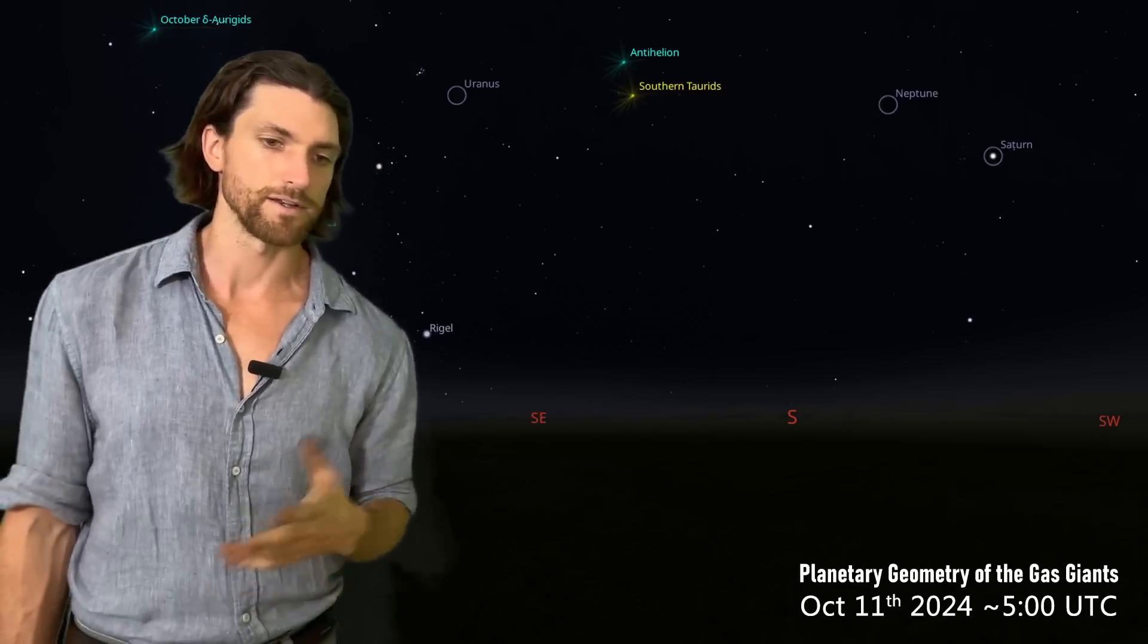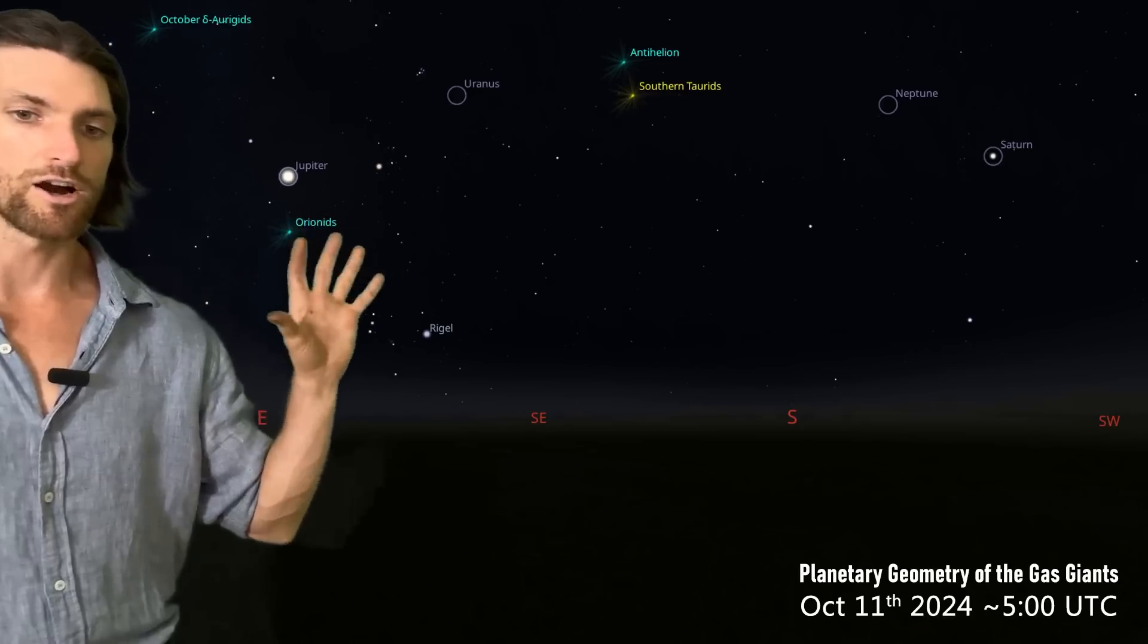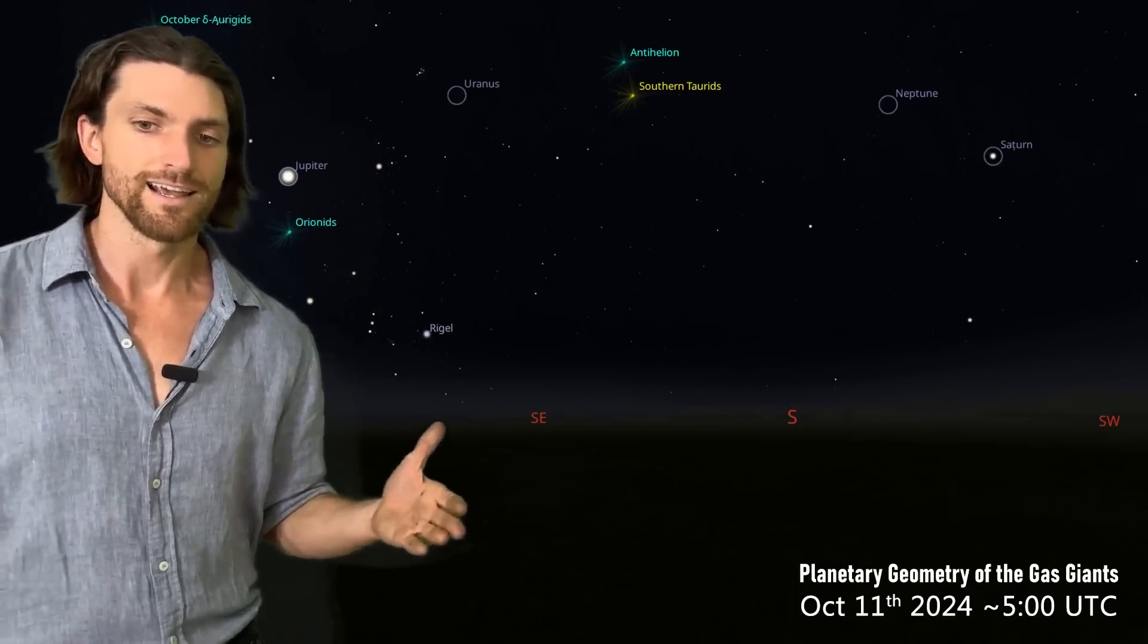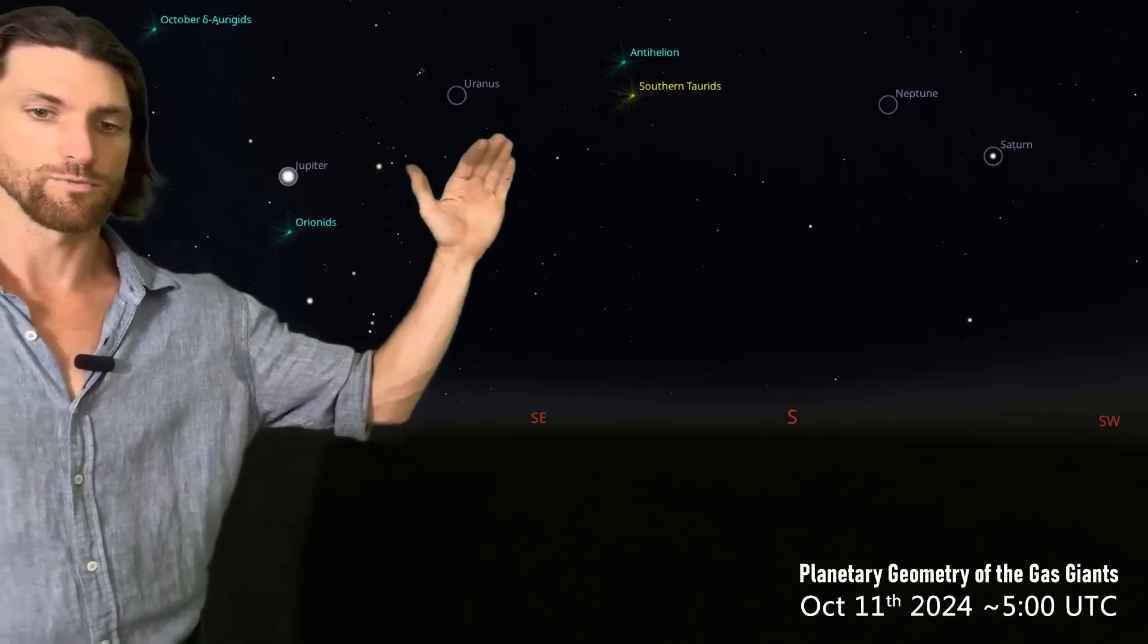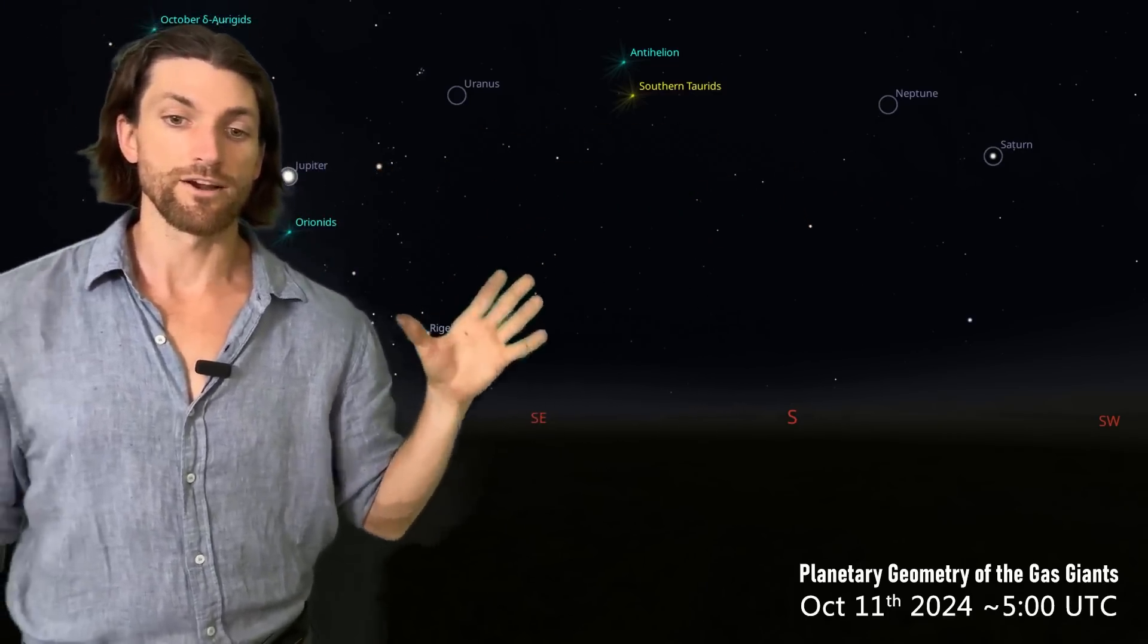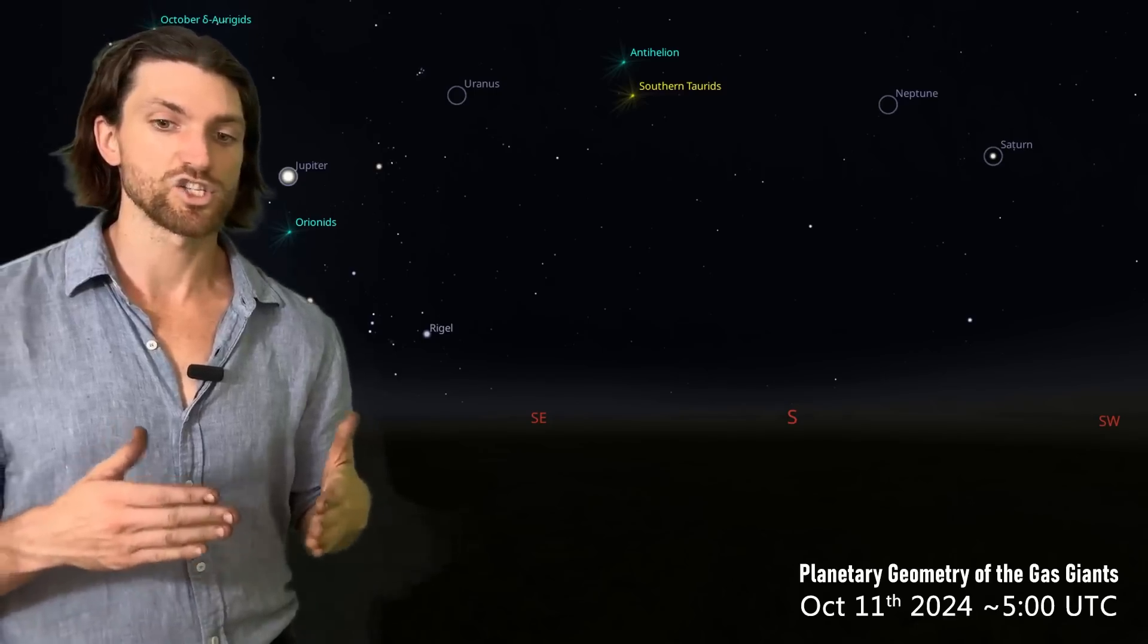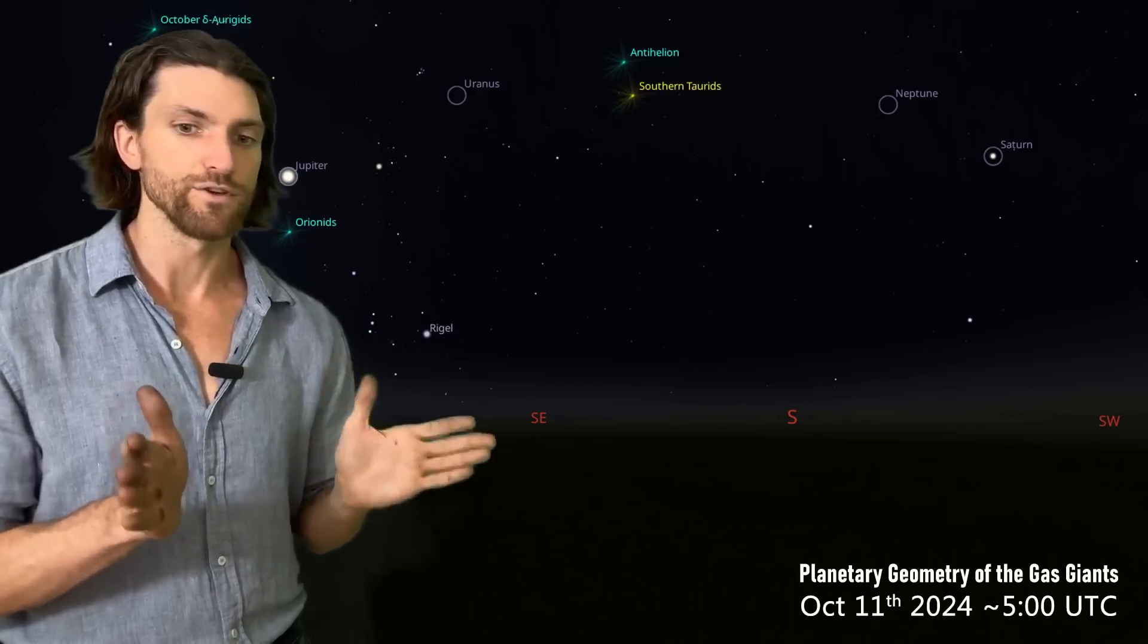But regardless of our ability to see it, there is this geometry emerging where you have this slope there, that slope there, and they are symmetric to each other. They are also right now approximately in a square configuration as it relates to the angles as viewed from Earth. So these are fairly close together. Jupiter and Uranus and Neptune and Saturn are even closer together at this moment in time.